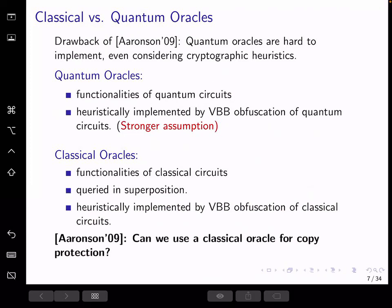And of course, quantum oracles, in the eyes of the complexity theorists, is in general a much stronger tool. Therefore, Arison in 2009 asked if we can build quantum copy protection using only a classical oracle.